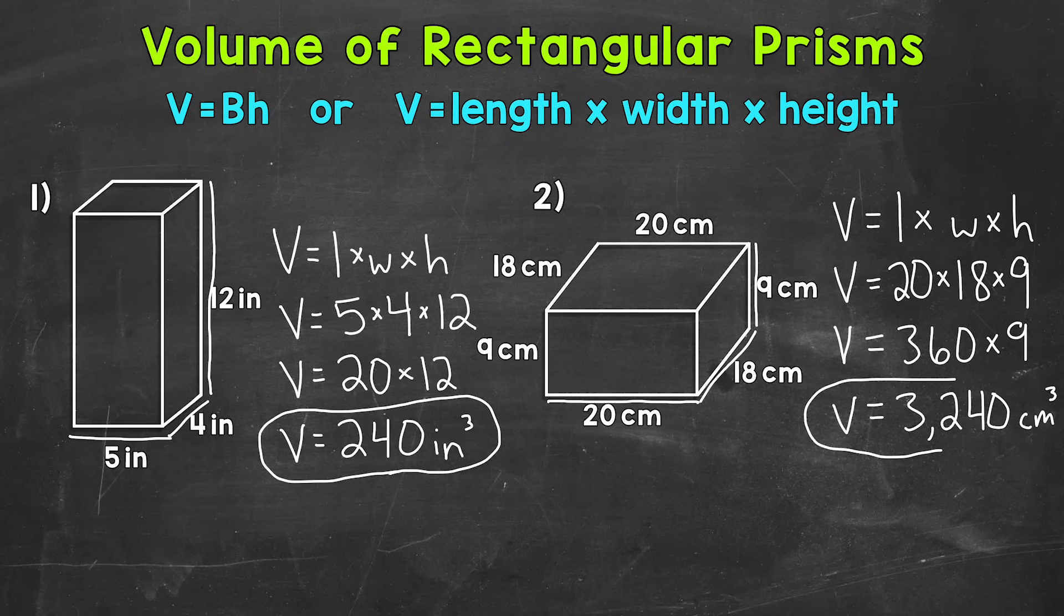Final volume, 3240 cubic centimeters. So there you have it. There's how you find the volume of a rectangular prism. Volume equals length times width times height.